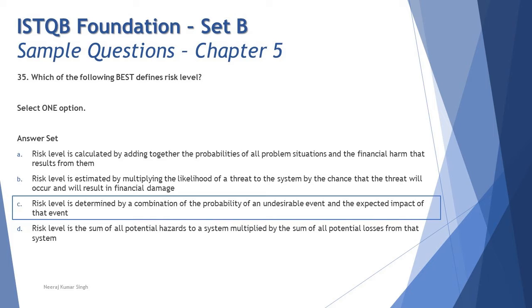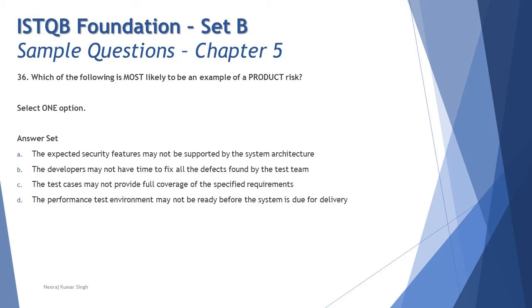Let's jump to question 36: which of the following is most likely to be an example of product risk? First, you should immediately differentiate in your mind — product risk is different from project risk. Product risk is more about software quality characteristics, whereas project risk is more about the process used to make the product.